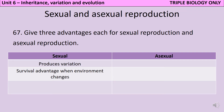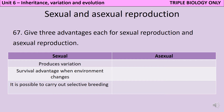It's only possible for evolution to happen by natural selection where there's variation in a population. So particularly if we're thinking about humans trying to carry out selective breeding, we can only do that with organisms that can reproduce sexually, because without that there wouldn't be variation in the offspring and we wouldn't be able to pick out the organisms that had the most desirable traits.